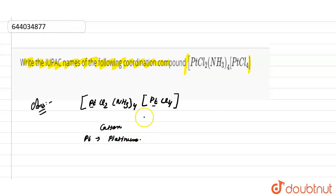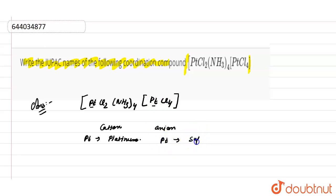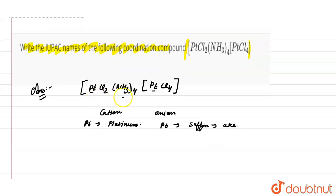If the complex is an anion, then the name of the central metal atom ends with the suffix '-ate'. So if this complex is an anion, the central metal atom name ends with the suffix '-ate'.